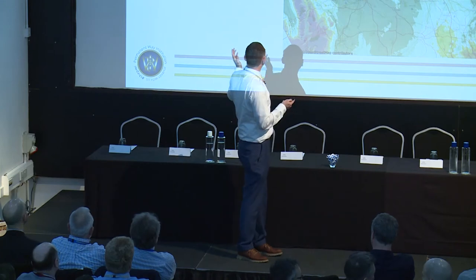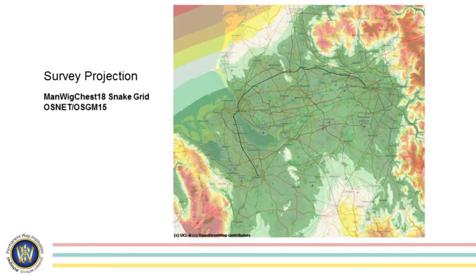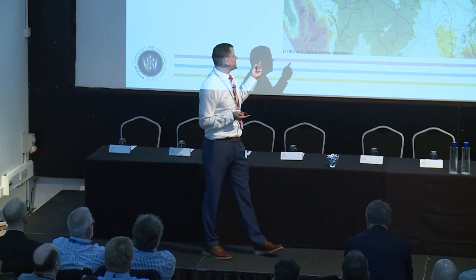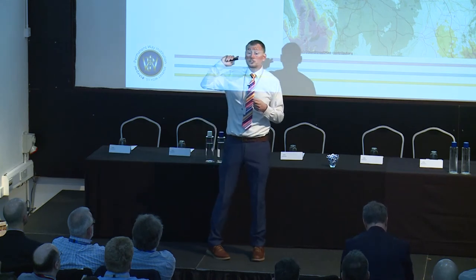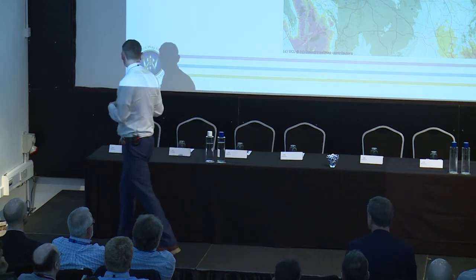For the start of any survey work we should be clear on the survey projection. With this particular project we will be having two project systems: the Ordnance Survey so we can tie into the local roads, and our railway snake grid projection. Manwig Chest 18 is a new projection we've had made — if you've got a job in the green area we can use this snake grid. It's very easy and very handy.